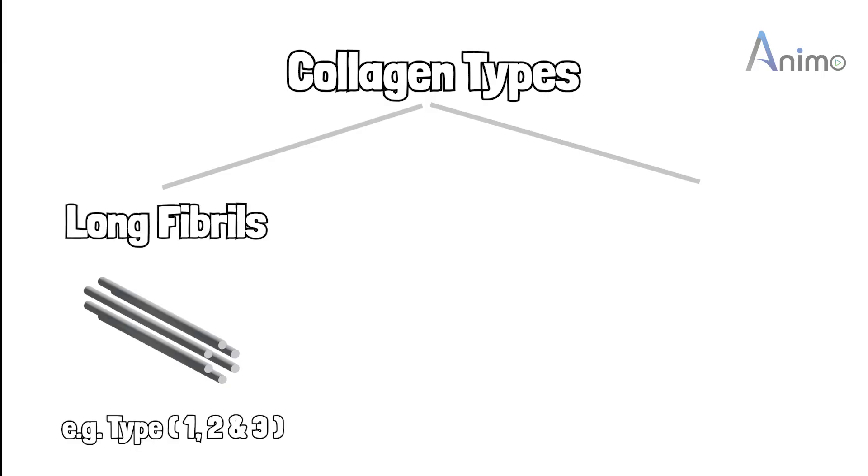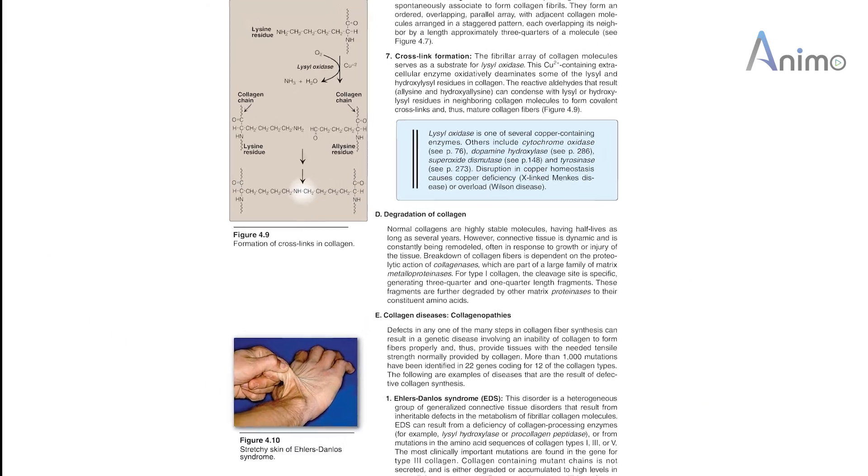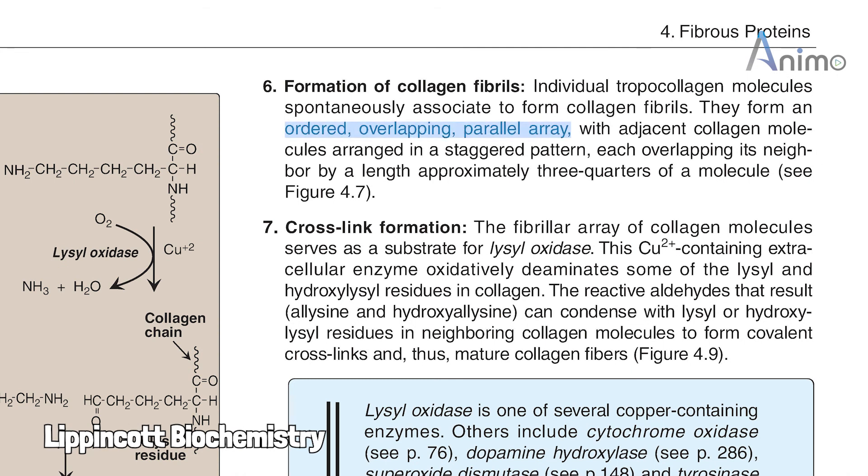We're concerned about fibrils, not mesh networks. Tropocollagen spontaneously combines and makes an ordered overlapping parallel array with a staggered pattern, adjacent to its neighbor by three-fourths molecule length, and now it's called collagen fibril.